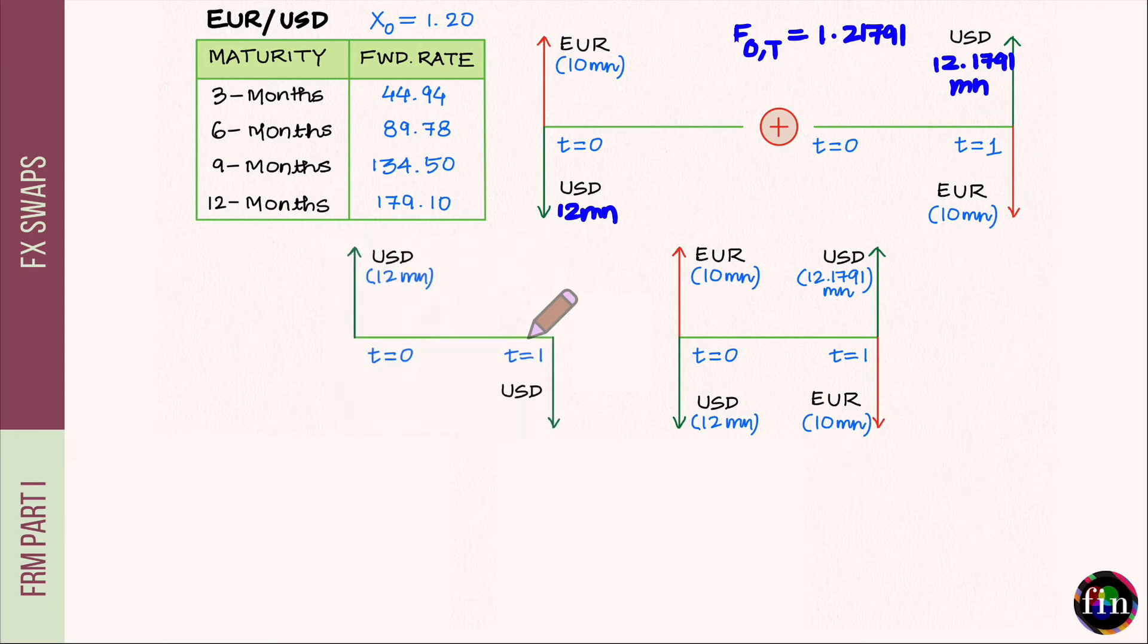Let me ask my firm to borrow 10 million times 1.2, hence 12 million USD in its local market. As of today, time t equals 0, my firm receives 12 million USD. Since the interest rate is 2% per annum, after one year the firm has to pay out 12 million times 1.02, which comes to 12.24 million USD.